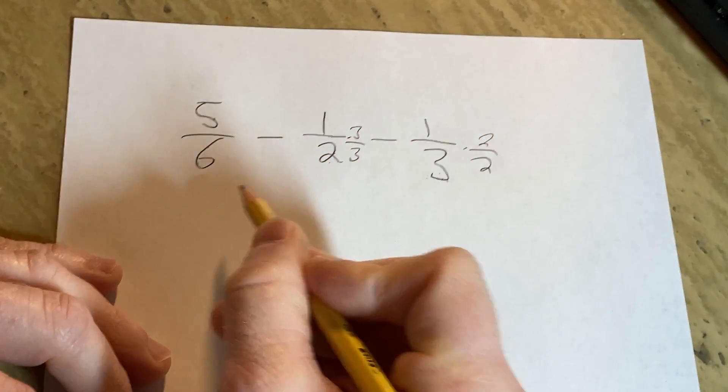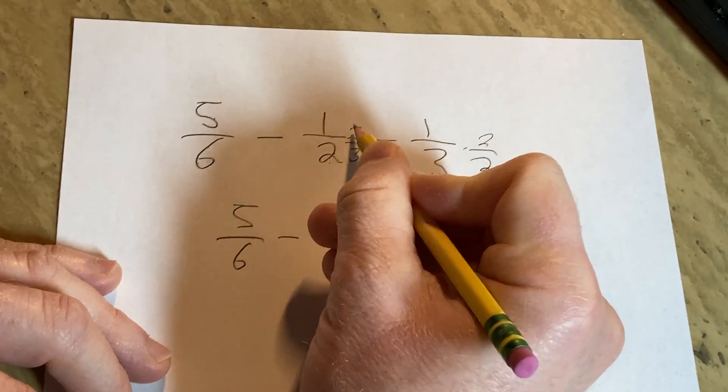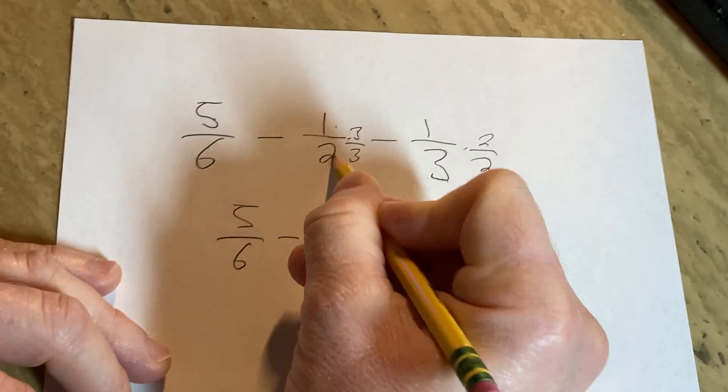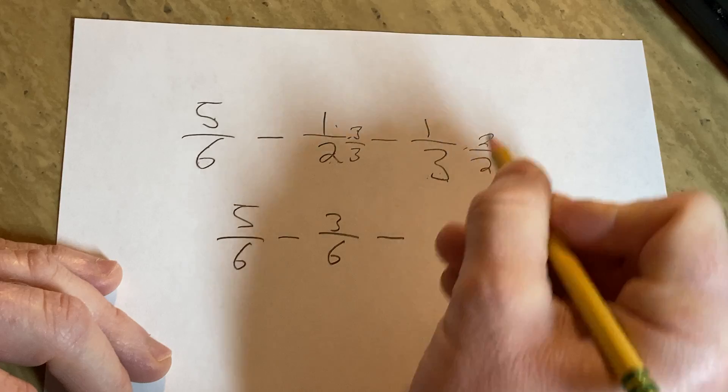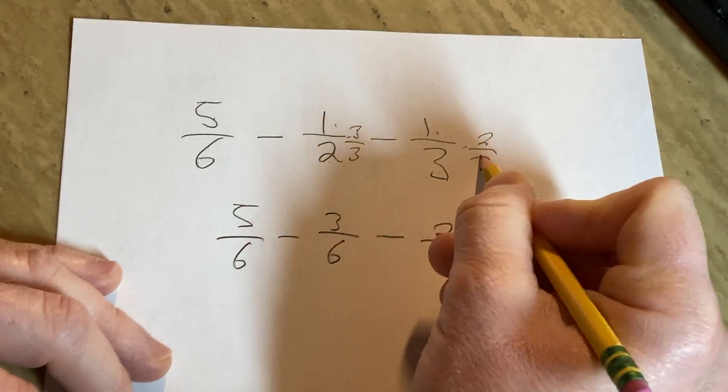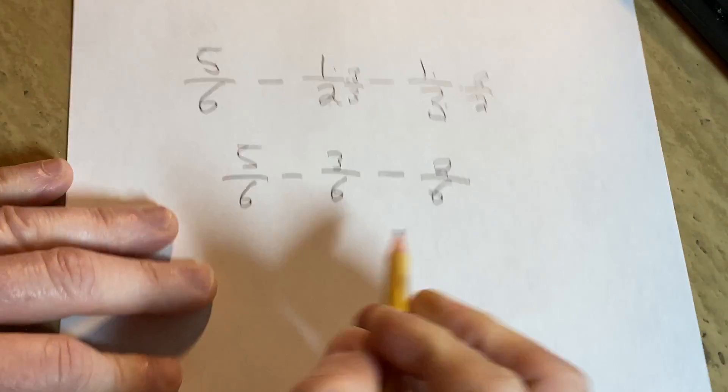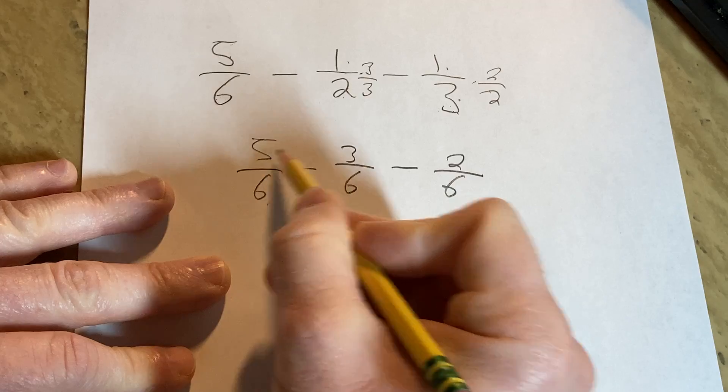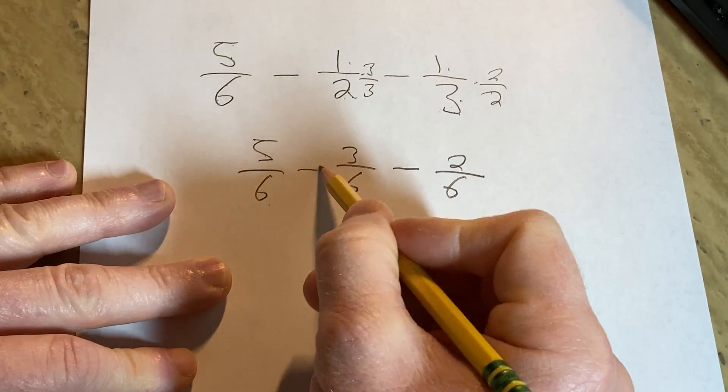So 5 over 6 minus 3 times 1 is 3, 3 times 2 is 6, minus 2 times 1 is 2, 2 times 3 is 6. Now we have 6 on the bottom, so we can just subtract straight across. 5 minus 3 minus 2.